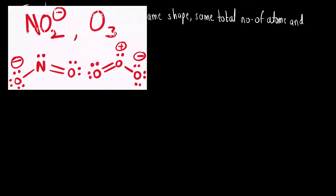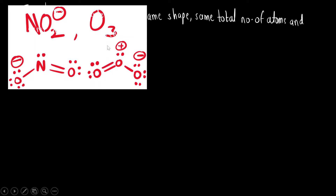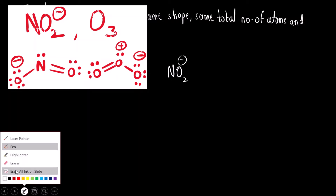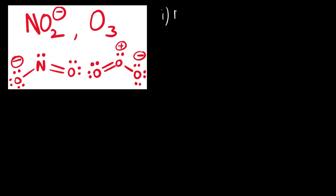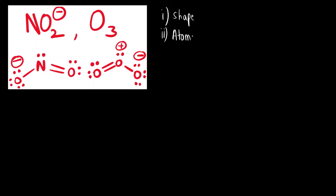Let us first understand with the help of the example of NO₂⁻ and O₃, that is ozone. What all things are the same? First is the shape. Second is the number of atoms. Third is the total number of valence electrons.